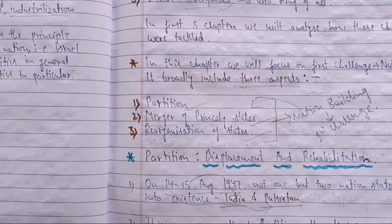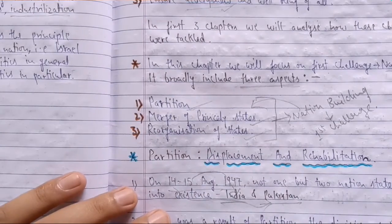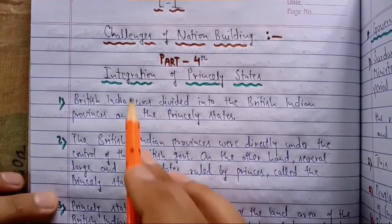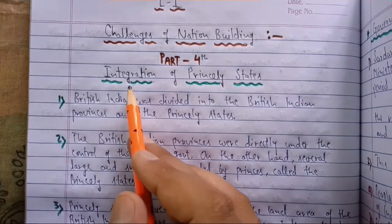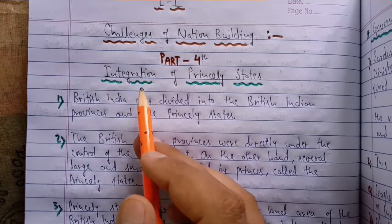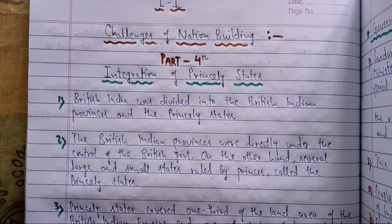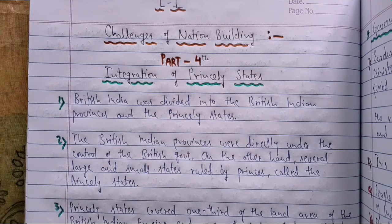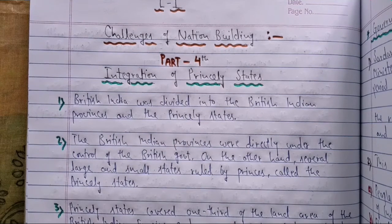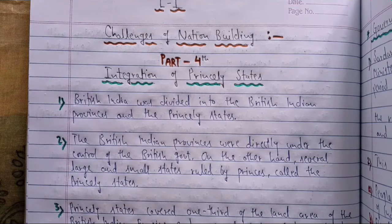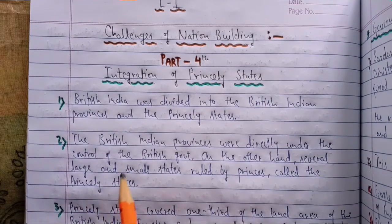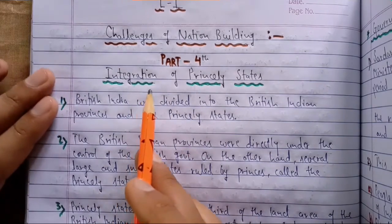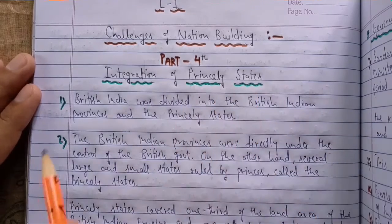The topic for the day is Integration of Princely States - this is Part 4 of this chapter. The meaning of integration is merging or joining together, bringing all the states of India together after independence so that we can unite, build our nation on the principles which our nationalists had thought - that we are going to be a democratic country following a parliamentary system. It was very important to integrate all the princely states.